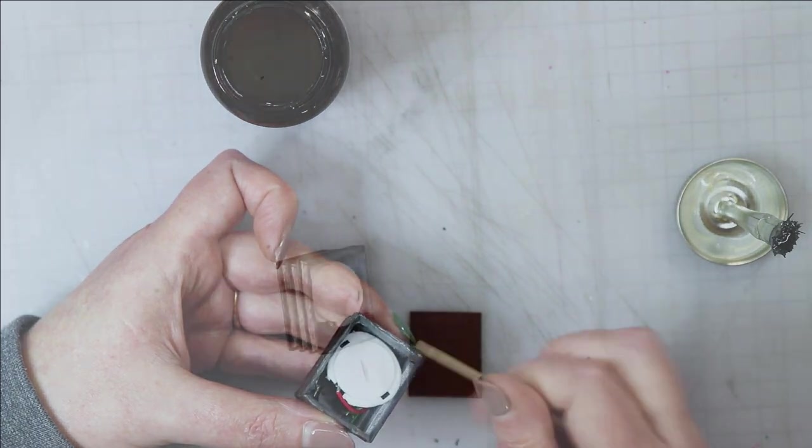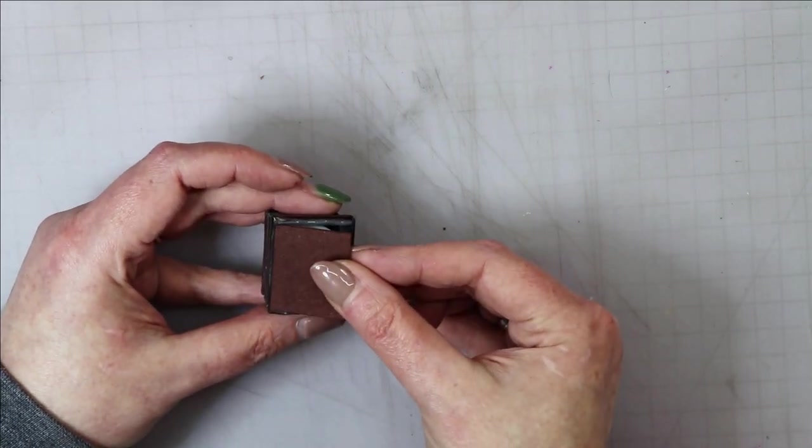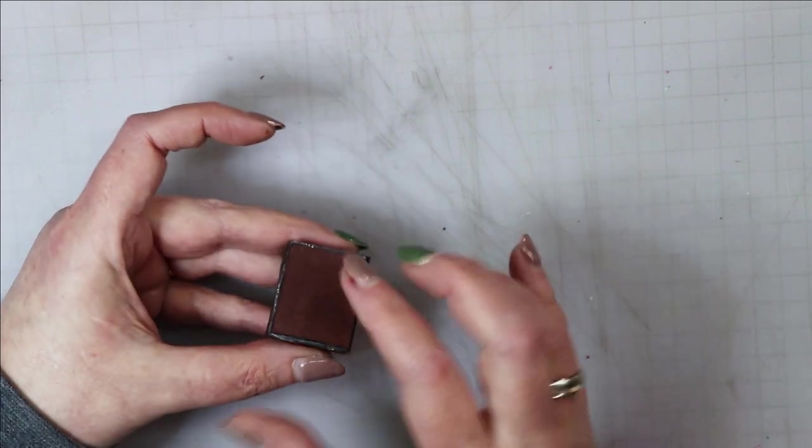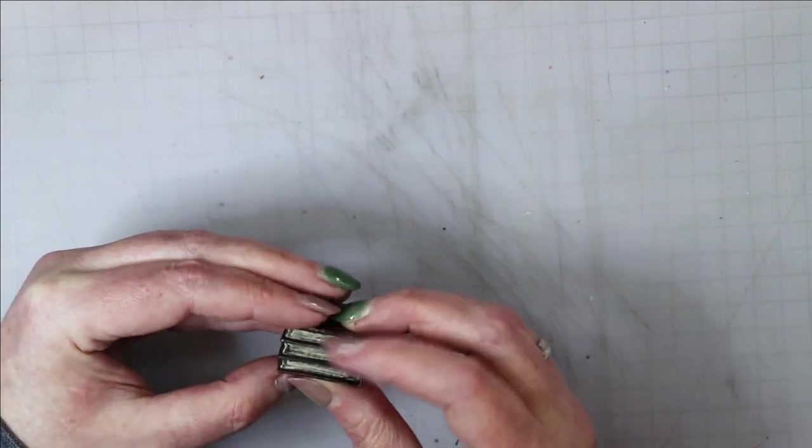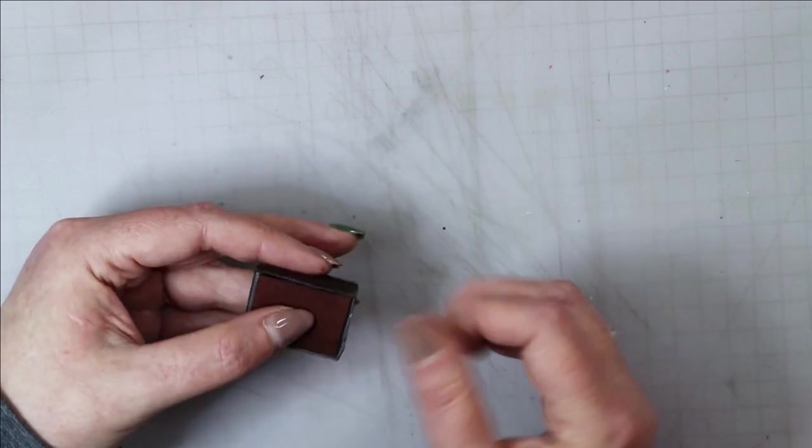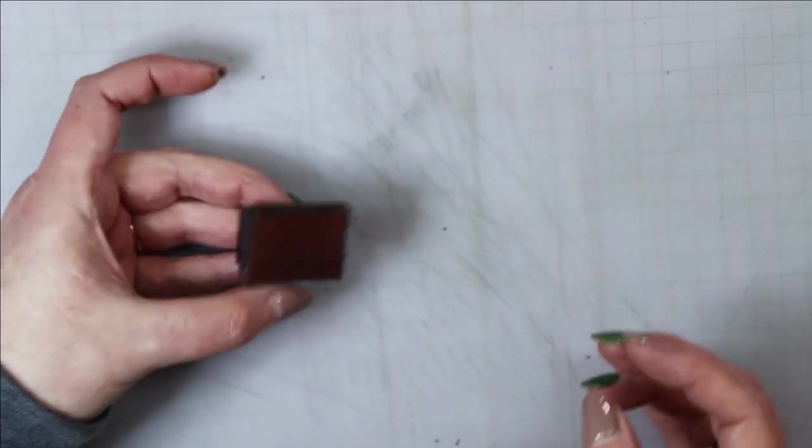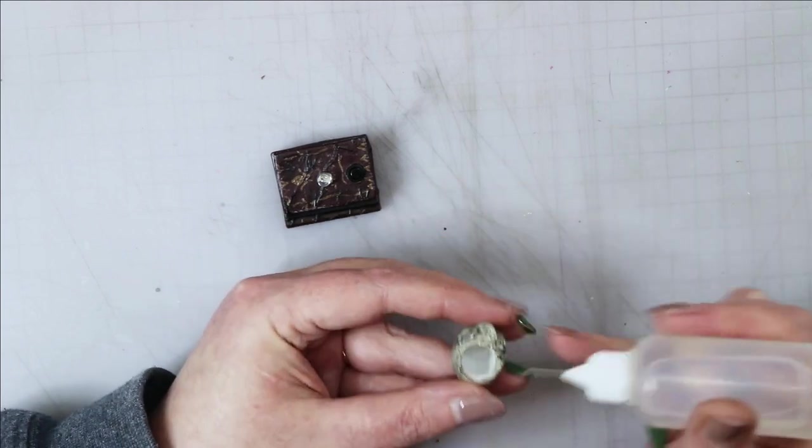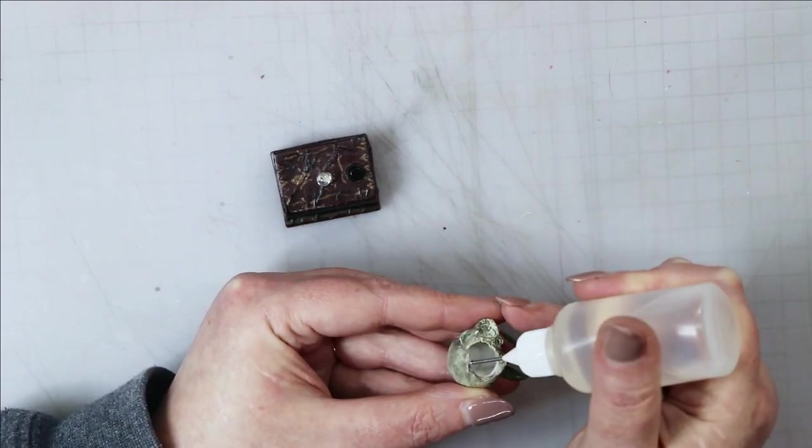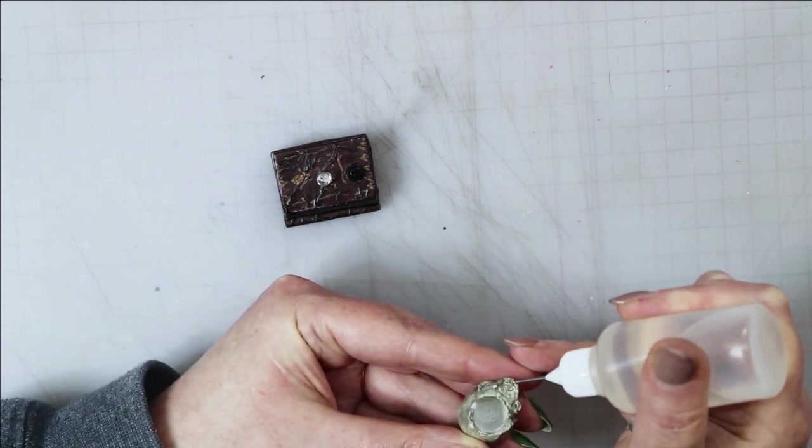I initially thought about gluing in one side with fabric tack but then I remembered that I have rubber cement. Rubber cement is perfect because it will hold it in place, but if I need to pop that piece of matte board out it will do so easily without damaging the matte board or the base of the light. I just glued three sides of the matte board in so that I can easily stick a small screwdriver or tweezers under it and flip it out.